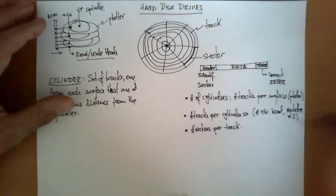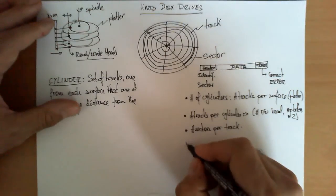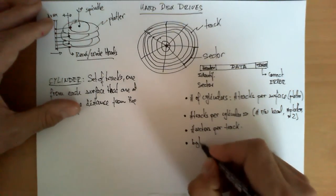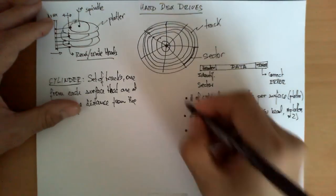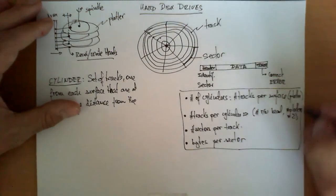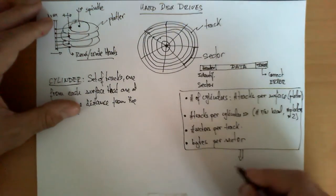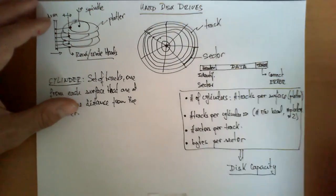Now with these three parameters, what we are able to compute is the number of sectors that are available in a disk. If we add the number of bytes per sector, then with these four parameters, we are capable of calculating the disk capacity or disk size.